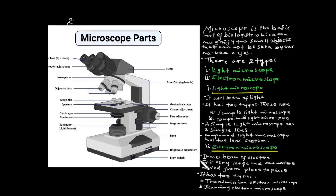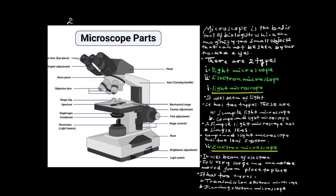A simple light microscope has a single lens — it is a small lens with one eyepiece lens. It has a single lens system.